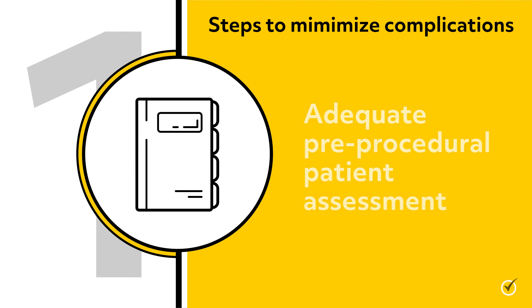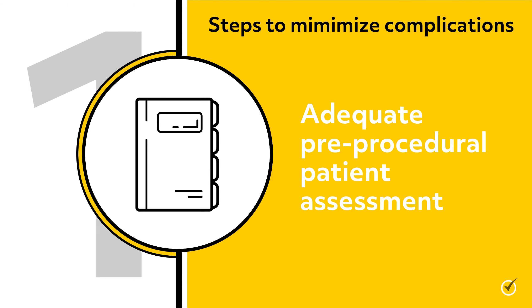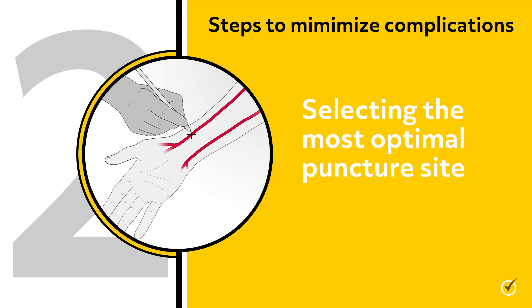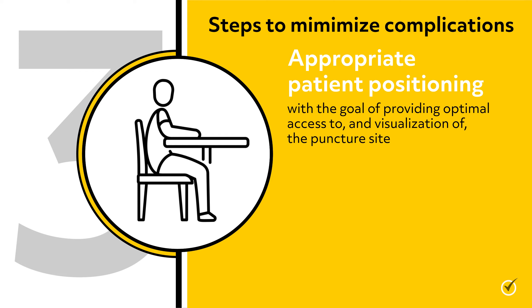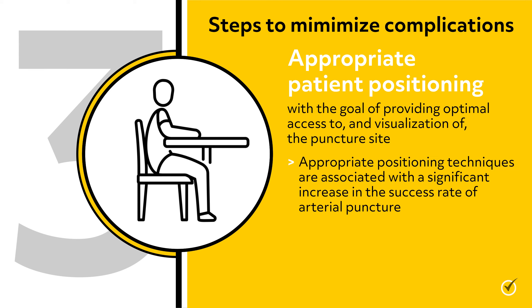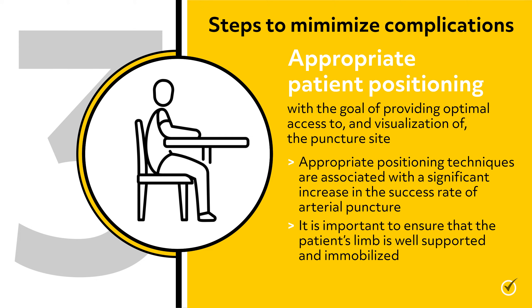Now let's go over the ways that complications can be minimized. Number one: adequate pre-procedural patient assessment. Number two: selecting the most optimal puncture site with the lowest risk for complications. Number three: appropriate patient positioning with the goal of providing optimal access to and visualization of the puncture site. Appropriate positioning techniques are associated with a significant increase in the success rate of arterial puncture. It is important to ensure that the patient's limb is well supported and immobilized.